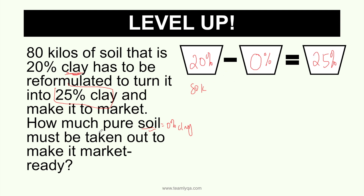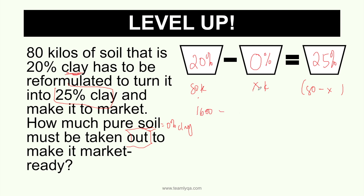What we're removing is the unknown — x. 'How much pure soil must be taken out?' — that's our x. The resulting product will be 80 minus x kilos. So: 20 times 80, minus 0% times x (which is 0x), equals 25% distributed over the result. So we have 20 times 80 minus 0x equals 25 times (80 minus x). 20 times 80 is 1,600. We distribute the 25.